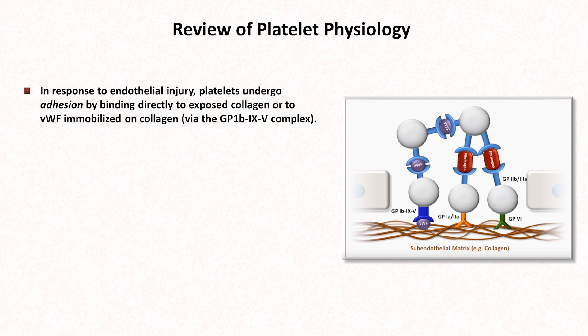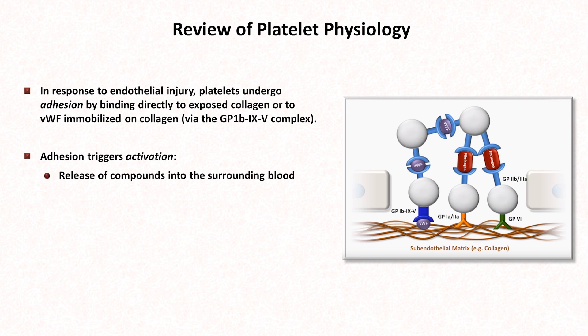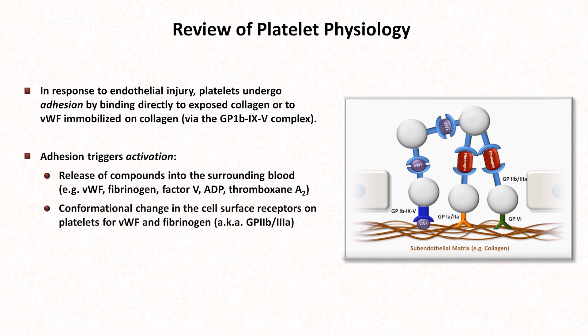This binding triggers the process of platelet activation. Activation involves a number of changes and actions, most notably including the release of compounds into the surrounding blood — specifically more von Willebrand factor, fibrinogen, clotting factor V, ADP, and a compound called thromboxane A2. There is also a conformation change in the cell surface receptors for von Willebrand factor and fibrinogen, a receptor which also goes by the name GP2B3A, and a change in the platelet shape resulting in a more amorphous form with numerous projecting fingers of cytoplasm.